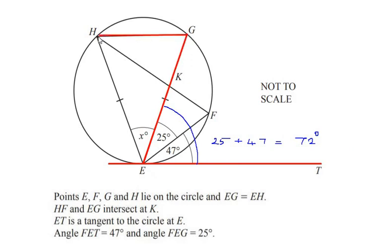Since this angle is 72 degrees, the same chord is making an angle of H in the alternate segment, that is in the major segment of the circle. If this angle is 72 degrees in the minor segment, then the same angle is going to be in the alternate segment as well.